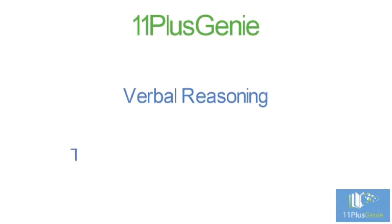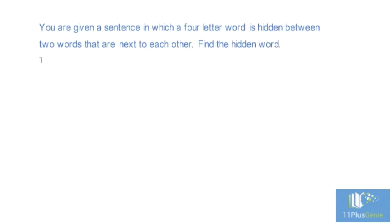Verbal Reasoning Type 8: Hidden Four-Letter Word. You are given a sentence in which a four-letter word is hidden between two words that are next to each other. Find the hidden word. The word will start somewhere in the middle of one word and finish somewhere in the middle of another word.